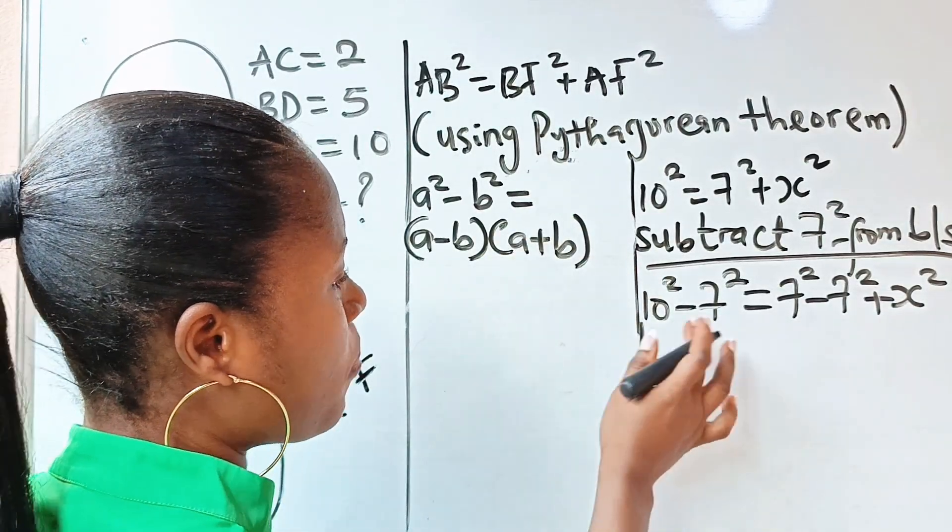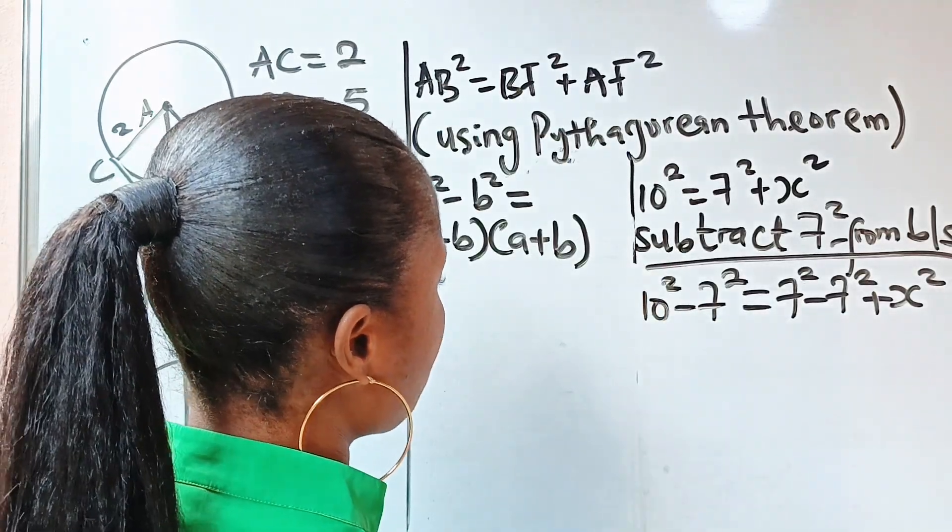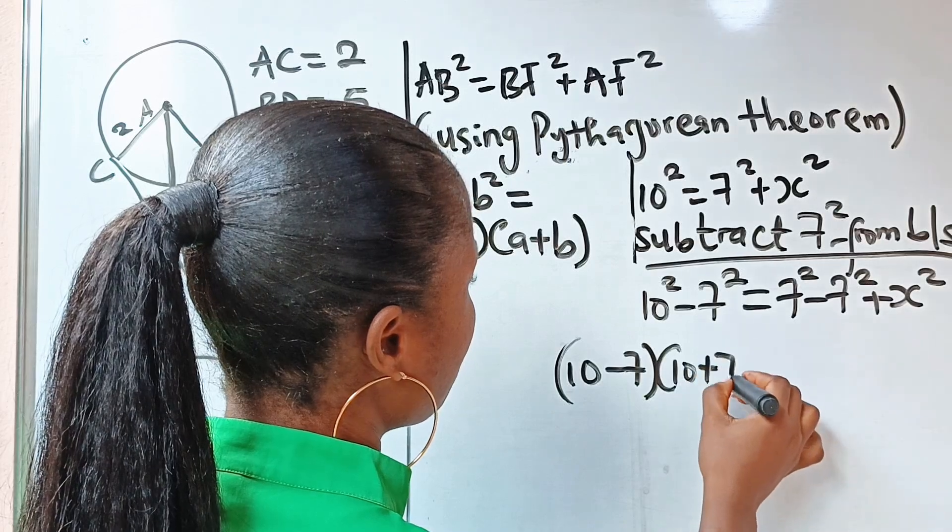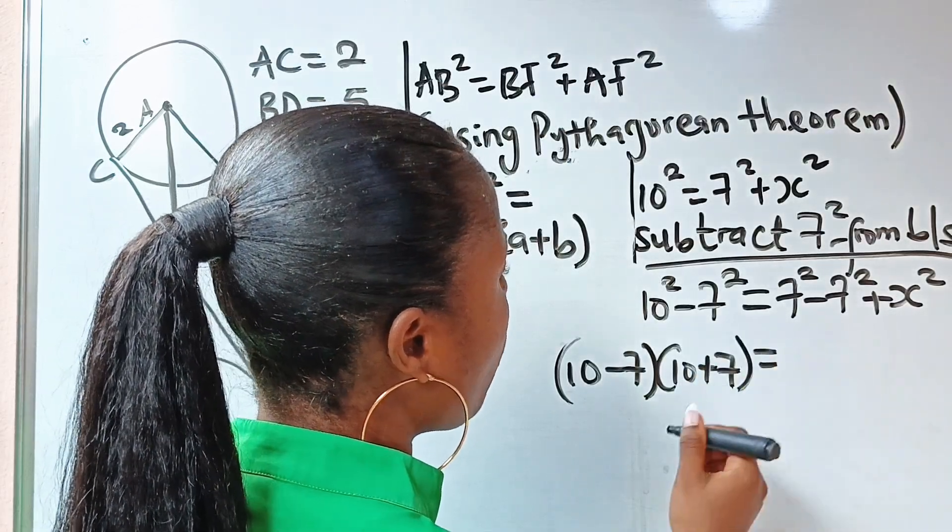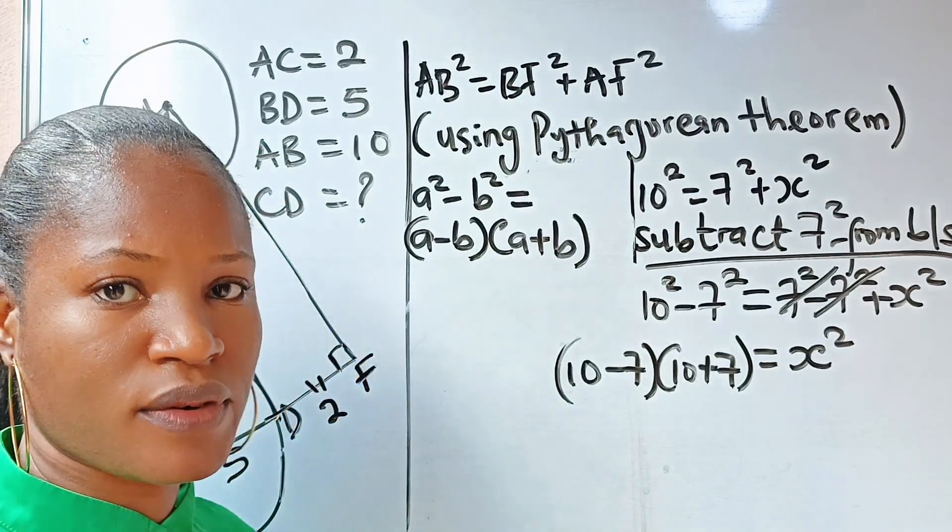Now let's apply that here. So this will be 10 minus 7 multiplied by 10 plus 7 is equal to x squared, because 7 squared minus 7 squared will give us 0.